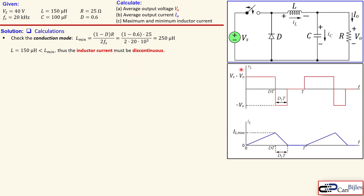In discontinuous mode, the plot of V_L (voltage across the inductor) and I_L (current through the inductor) shows the current increasing, then decreasing, stopping at zero for part of the period, and then repeating. Similarly, the inductor voltage shows a positive value, drops to a negative value, then returns to zero and stays zero until the end of the period. This is the key difference from continuous current mode operation.